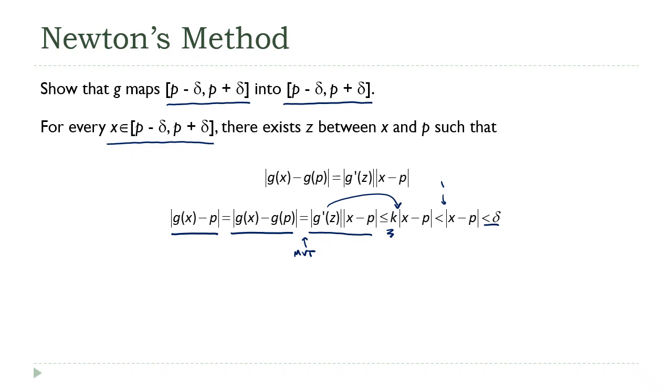Ignore all the stuff in the middle and just focus on the ends. The absolute value of g(x) minus p is less than delta. That's just another way of saying that g(x) is on the interval from p - δ up to p + δ. And that's what I need to show. If x is on this interval, then g(x) is also on this interval. That's the box criteria.